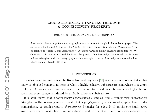The authors show that internal four-connectivity, a relaxation of four-connectivity, characterizes four-tangles. A graph is internally four-connected if it is three-connected, has more than four vertices, and every three-separator is independent and separates only one vertex from the rest of the graph. The main result, Theorem 1, states that internal four-connectedness characterizes four-tangles.